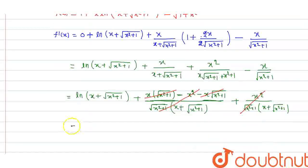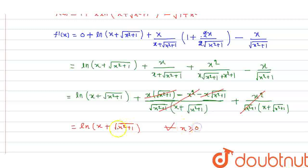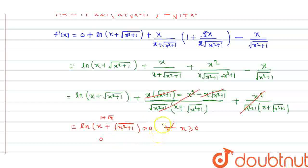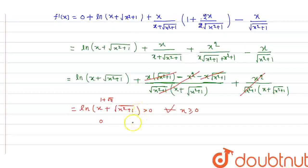So what we are left with is f'(x) = ln(x + √(x²+1)). Now for x greater than or equal to 0: if we substitute x = 0, we get ln(1) = 0, and for x = 1 we get ln(1 + √2) > 0. So f'(x) is always greater than or equal to 0, meaning f(x) is an increasing function for x ≥ 0.